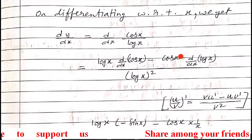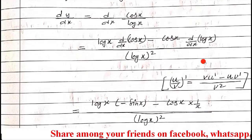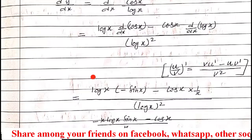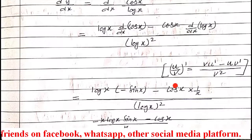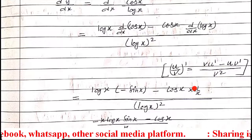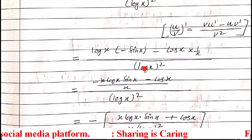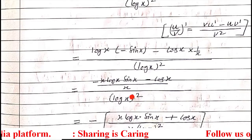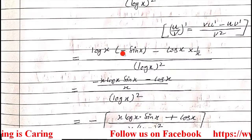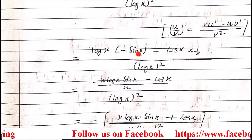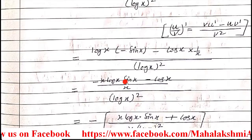The numerator is cos x. So we have log x multiplied by the differentiation of cos x, which is minus sin x. Then cos x multiplied by the differentiation of log x, which is 1/x. In the next step, log x squared stays as-is. We take the LCM of 1 and x in the denominator and simplify.